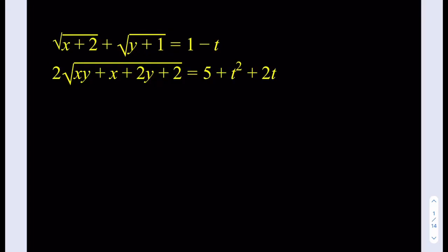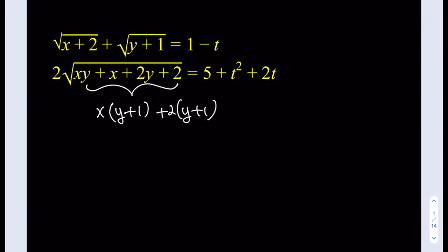We're going to consider some factoring under the second radical. We have a nice expression that, if you use grouping, you can factor out an x and factor out a 2. So the expression under the radical can actually be written as (x plus 2) times (y plus 1), which is nice because we also have the same expressions in the first equation.